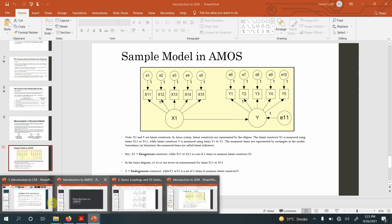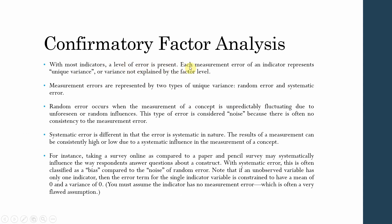With most indicators, a level of error is present. Each measurement error of an indicator represents unique variance — variance that is not explained by the individual items. Measurement errors are represented by two types of unique variance: random error or systematic error. Random error occurs when the measurement of a concept is unpredictably fluctuating due to unforeseen or random influences. This type of error is considered noise because there is often no consistency to the measurement error.